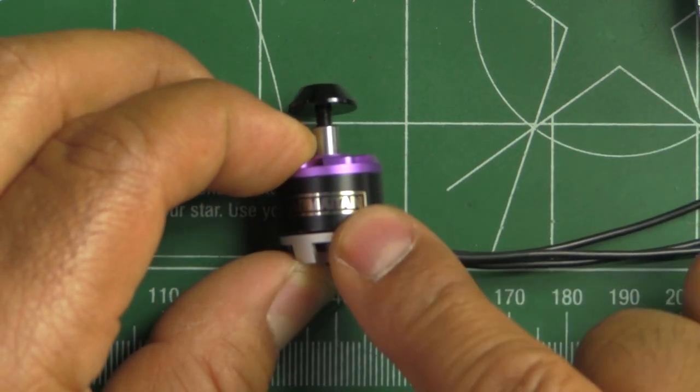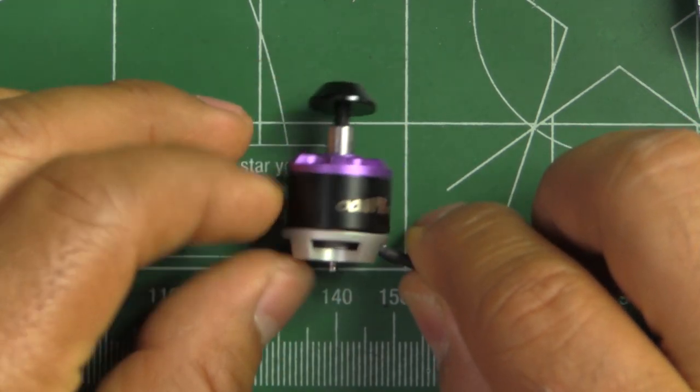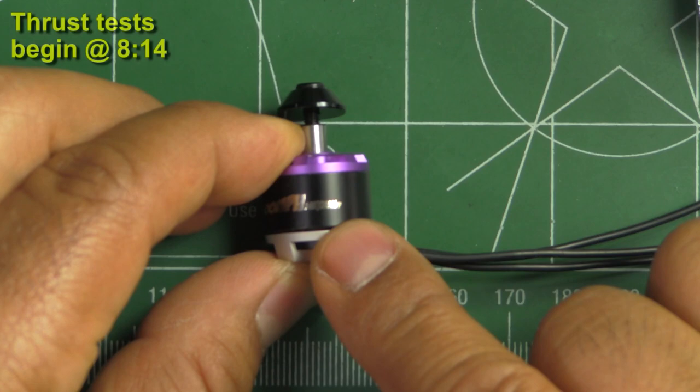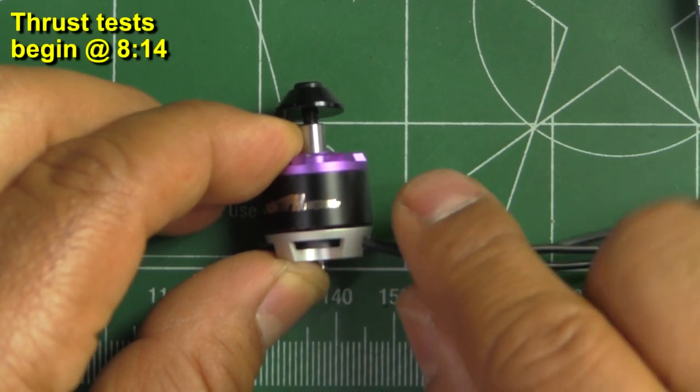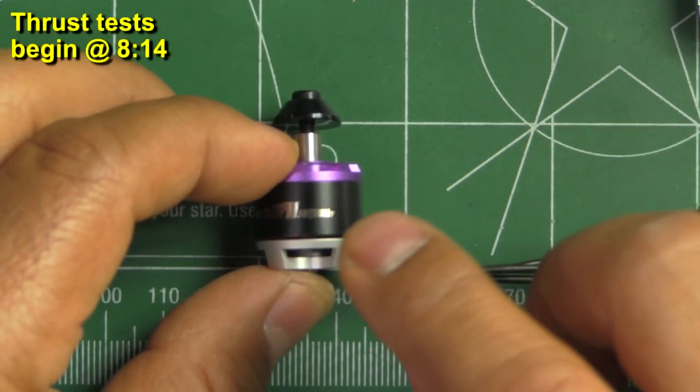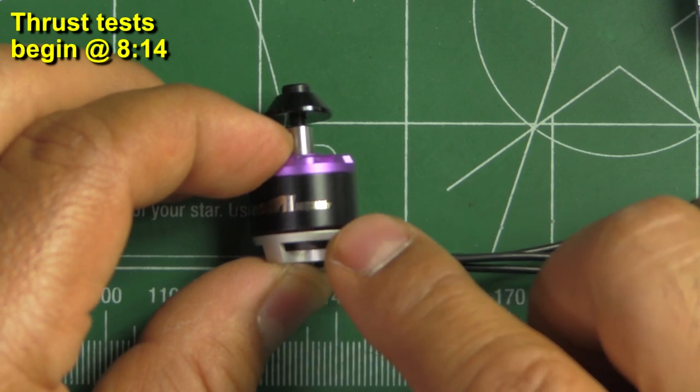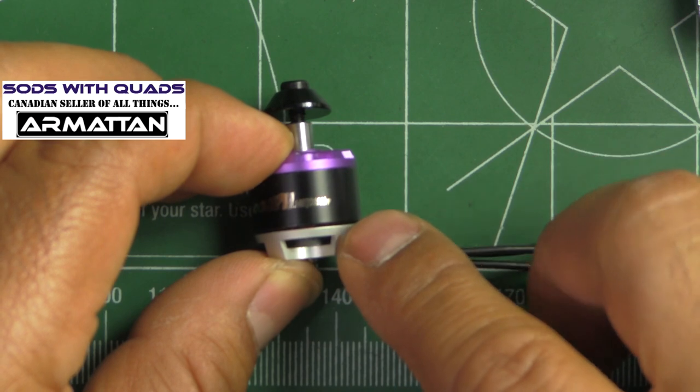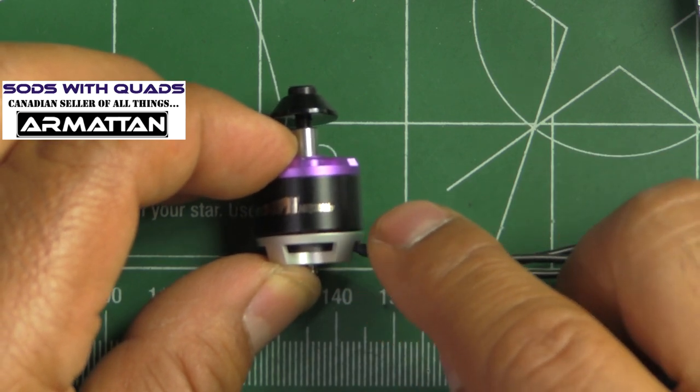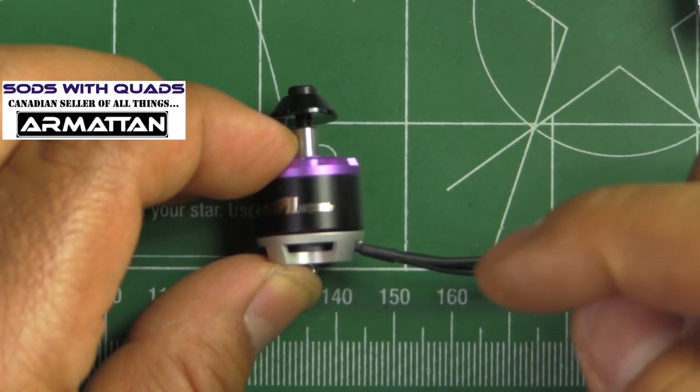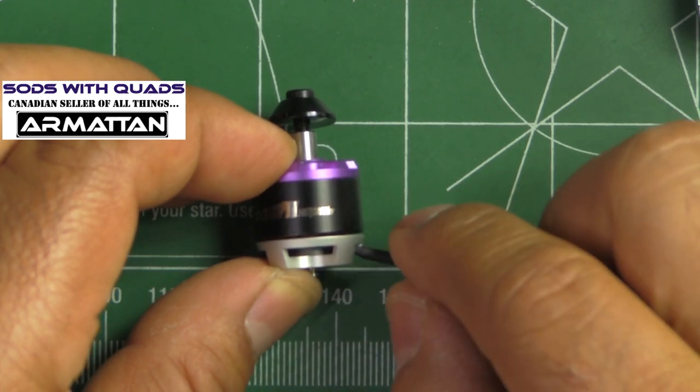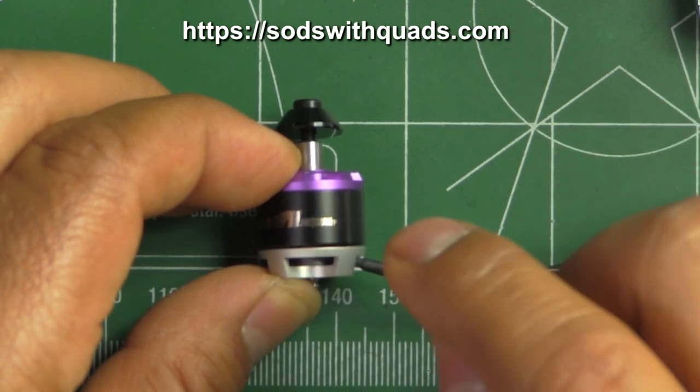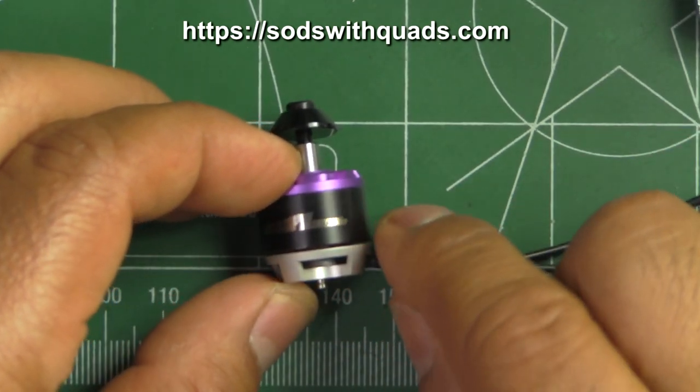So here we have the Armatan Oomph 1407 3850kV motor. This one was sent in graciously by sodswithquads.com. I'll have the link down in the description and also there's the link. I'll put the link right up there. Thank you for sending it.